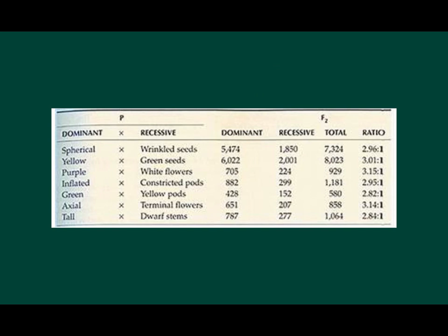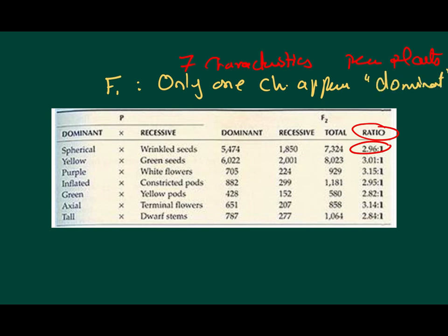You can see here in these tables the results of Mendel's experiment, which proved the ratio in the second generation 3 to 1 with all the phenotypes that he studied. He made his experiment on 7 characteristics in the pea plants. And he found that in the first generation, only one characteristic appears. He called it dominant. While in the second generation, F2, it was found that the two characteristics appear, but in a ratio of 3 to 1. 3 for the dominant and 1 for the recessive.